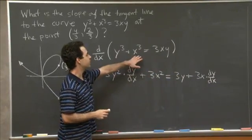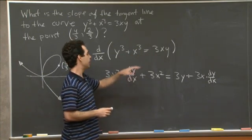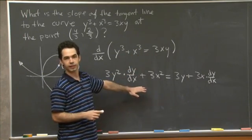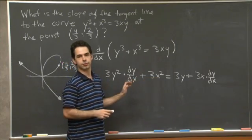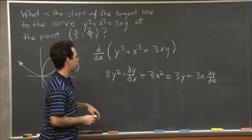So because this is an identity it holds for all values of x and y, this equality follows just by taking the derivative of both sides.